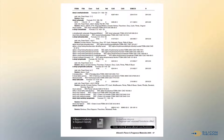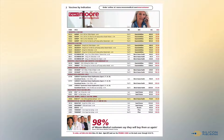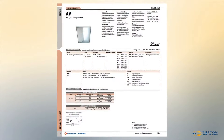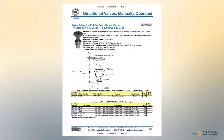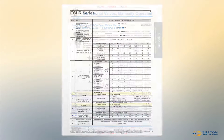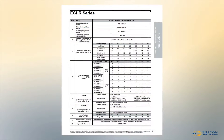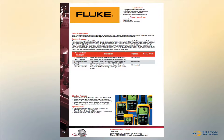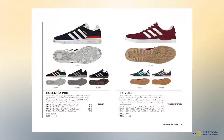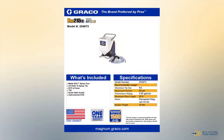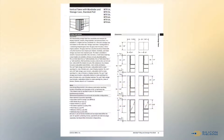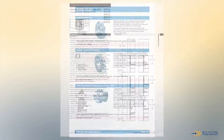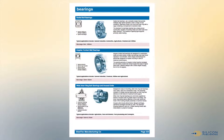We work with a broad range of catalogs for products ranging from fragrances, to fasteners, to electronic components, to shoes. If there's anything you can make or sell, chances are we have automated a catalog for it.